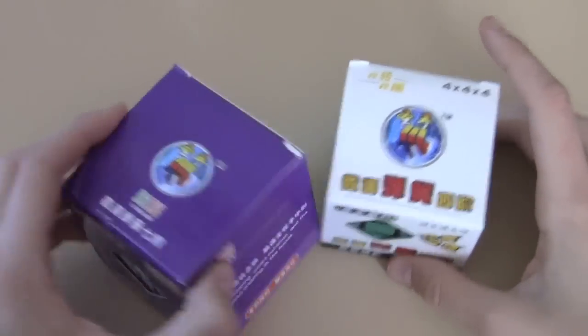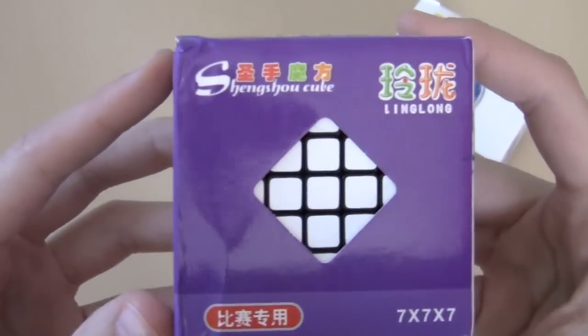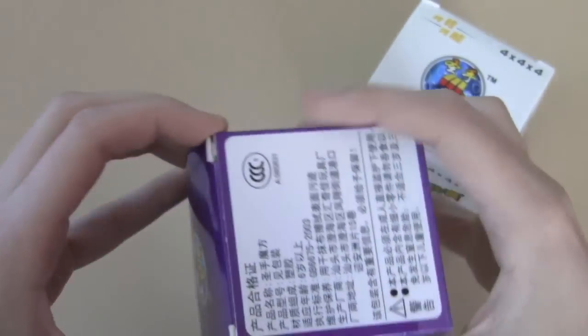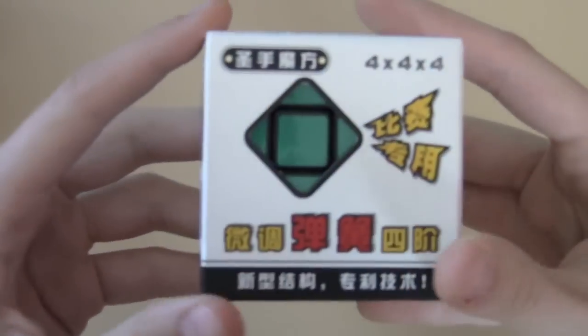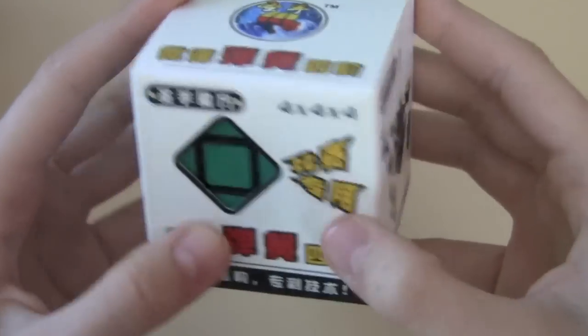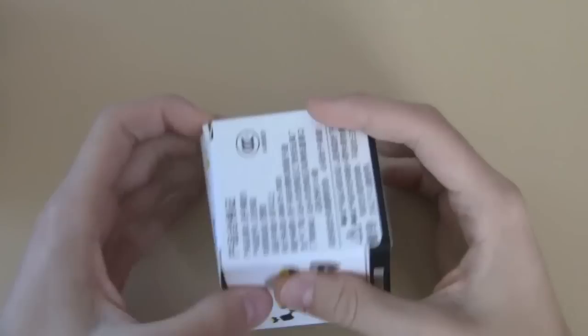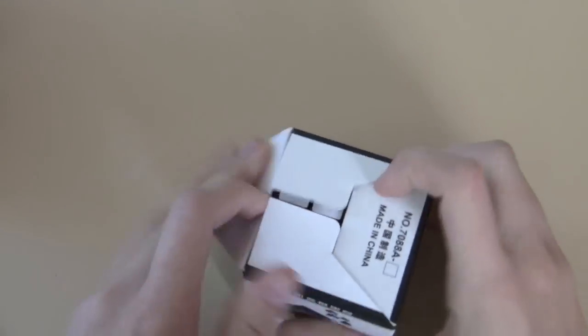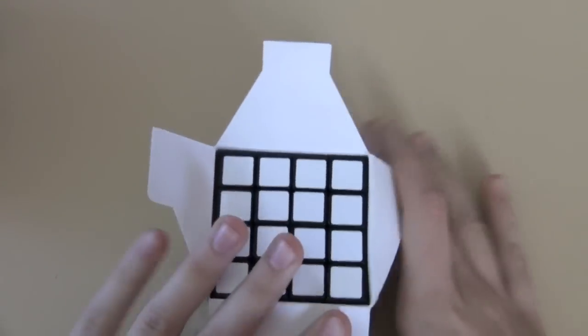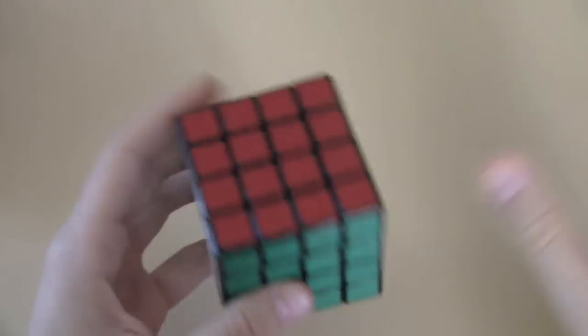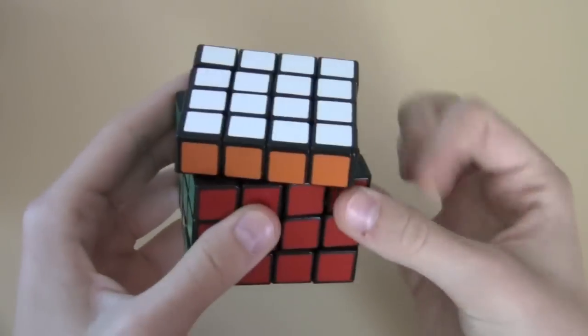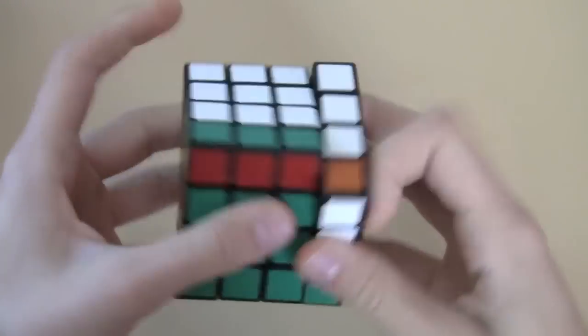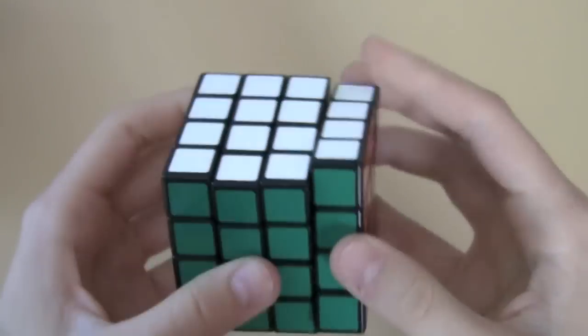Okay, so here I just unboxed the two cubes. This right here is a mini Shang Shao 7x7 and this right here is a Shang Shao 4x4 version 5. So on this cube I'm going to pretty much just be disassembling it completely down to the screws and springs and then just lubing it for her.